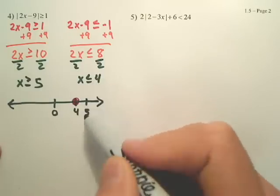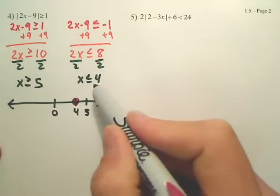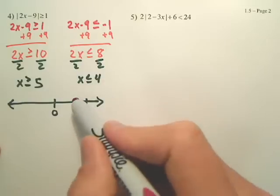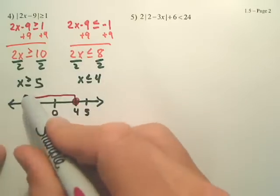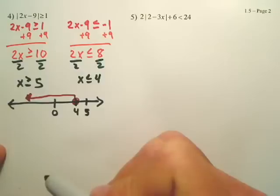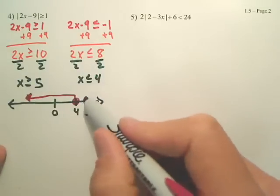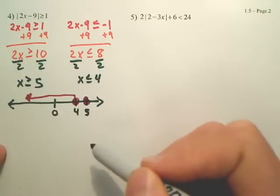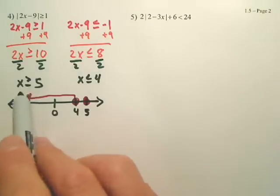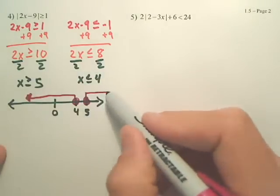And according to this, am I going to go left or right? It's less than or equal to 4, so doesn't that mean this way? And for the 5, it's also closed. And which way am I going? Follow the arrow. Greater than or equal to 5.